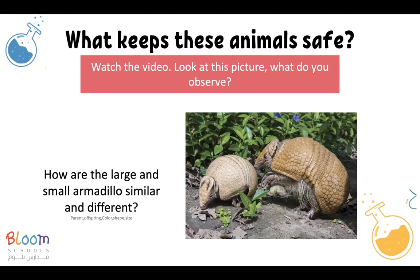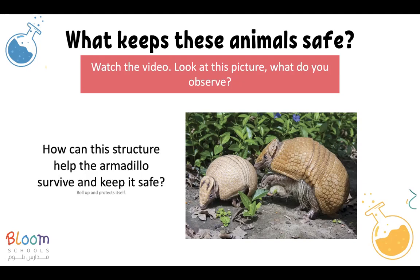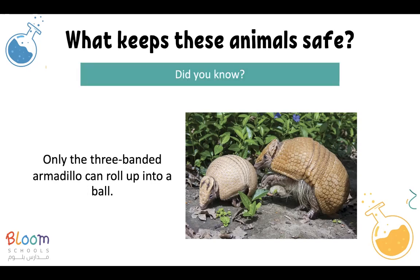We also discussed the differences between these two armadillos and how they use their shell to survive. Their shell protects them if something falls on them or another animal attacks them — they can just roll into a ball under their shell. This is how it protects them and helps them survive. The three-banded armadillo is the only kind of armadillo that can roll into a ball because of the three bands it has.